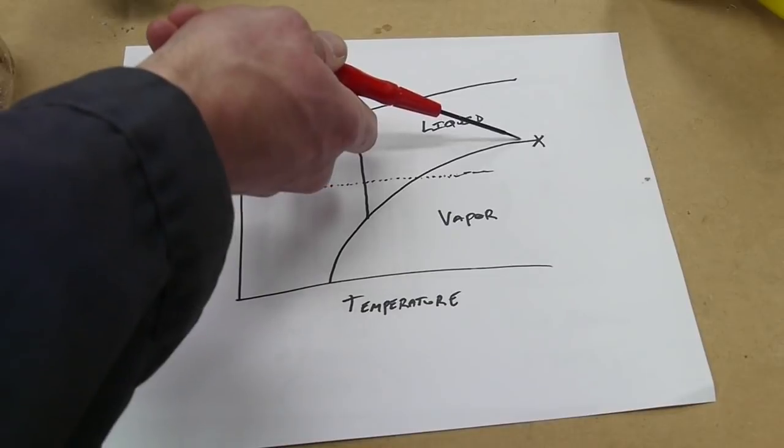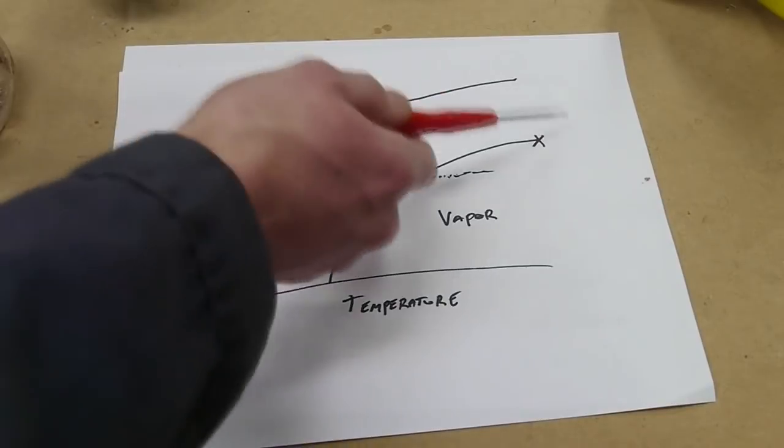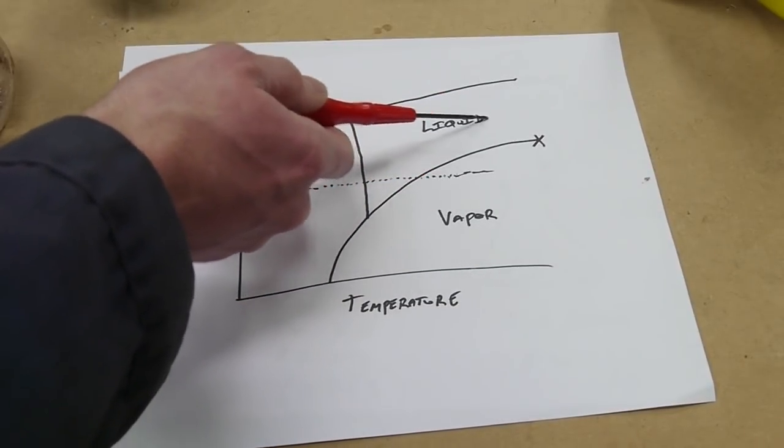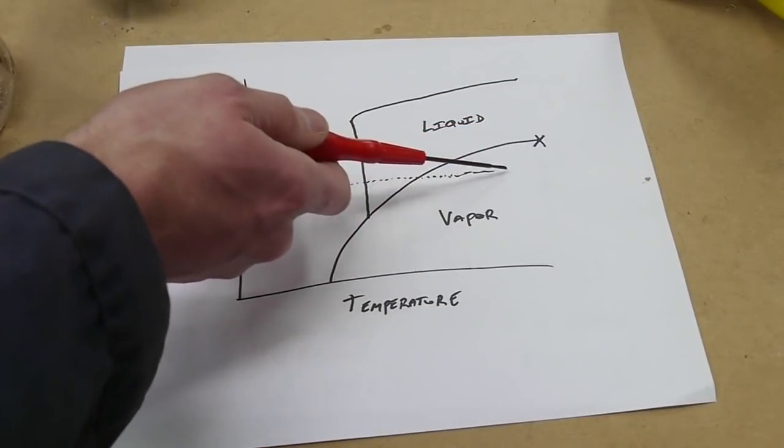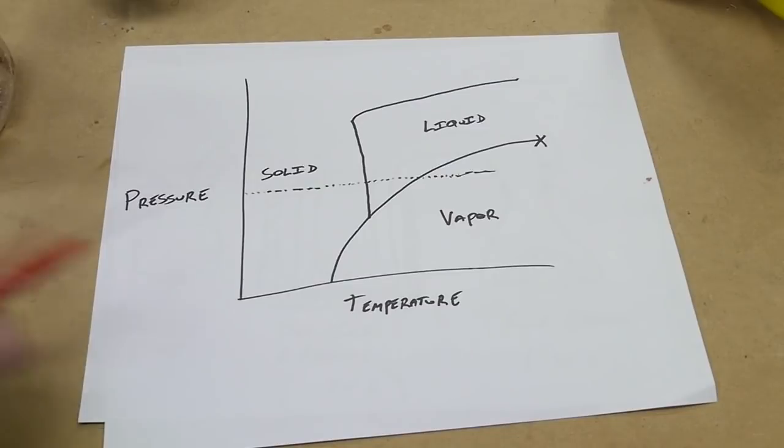This by the way is the critical point which I've talked about a little bit in some of my other videos where the difference between liquid and vapor ceases to exist. What you can do is go from liquid to vapor by going around this critical point and you never have to transition through this line. Phase diagrams are pretty cool, I encourage you to look at these for other substances and there's actually quite a bit more detail that I haven't included here which is pretty interesting.